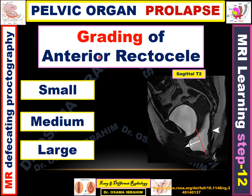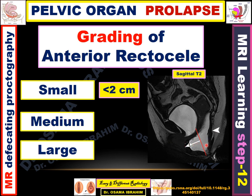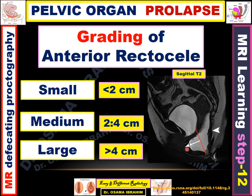At the end, the grading of anterior rectocele — as seen in case three — is based on the depth of anterior bulge toward the vagina. Less than 2 cm is considered small; 2 to 4 cm is medium; and more than 4 cm is considered a large anterior rectocele.